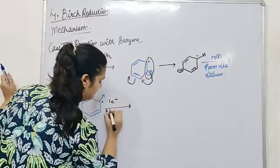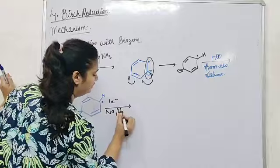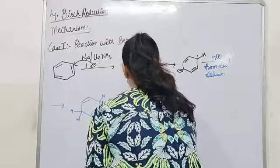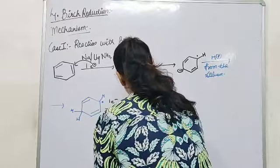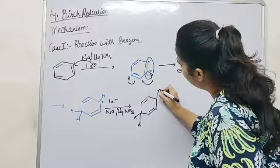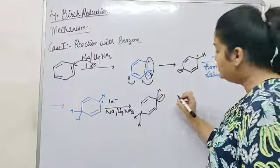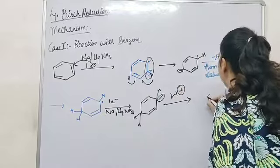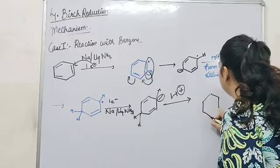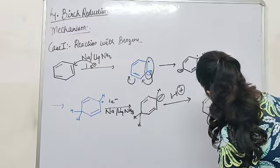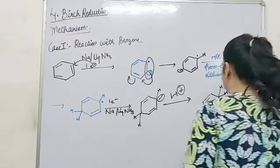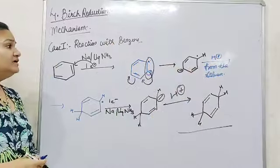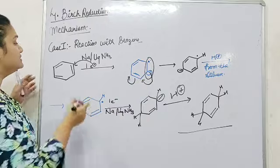Therefore what we get is an intermediate with H, H, H, and a radical. Now one more electron will come from sodium in liquid ammonia. A negative charge appears; again a proton is abstracted from the solvent, resulting in the formation of 1,4-cyclohexadiene. This is our required product.